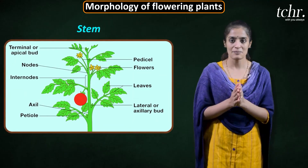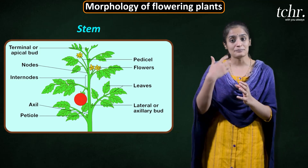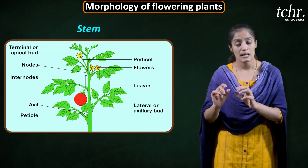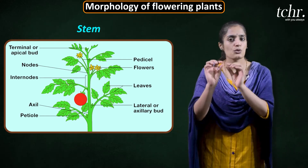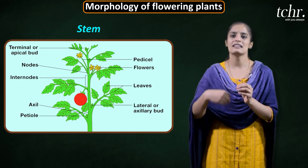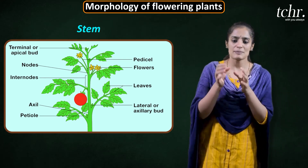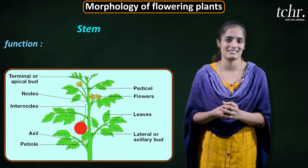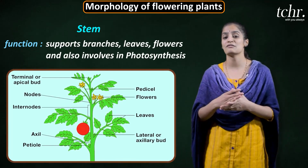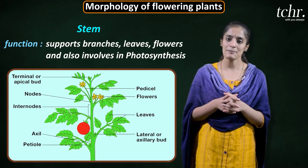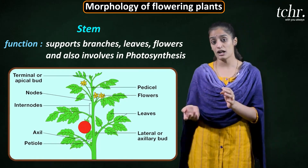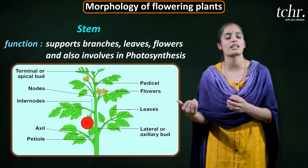Next, the stem. The stem has a nodal region and an internodal region. The nodal region has meristematic activity, which gives rise to branches and leaves. The stem's function is to support leaves, branches, and flowers, and it is also involved in photosynthesis. The stem also shows many adaptations and modifications — it can convert itself to form a tendril, a coil-like structure for support, as in cucumber, or a thorn-like structure.